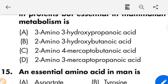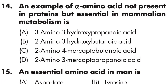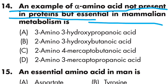Question number fourteen: an example of an alpha amino acid not present in protein but essential in mammalian metabolism — Option A is 3-amino-3-hydroxypropanoic acid, Option B is 2-amino-3-hydroxypropanoic acid, Option C is 2-amino-4-mercaptopropanoic acid, Option D is 2-amino-3-mercaptopropanoic acid. Option C is correct — 2-amino-4-mercaptopropanoic acid is not present in protein but essential in mammalian metabolism.